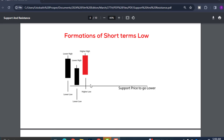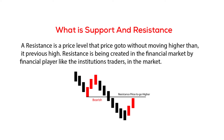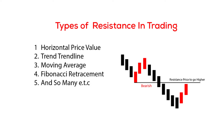Whenever price creates a short-term low, know that it's very difficult for price to go lower below that short-term low. Now let's look at what is a resistance. A resistance is a price level that price goes to without moving higher than its previous high. Resistance is being created in the financial market by financial players like institutional traders. Whenever price creates a lower high and a lower low, remember that that previous high will act as a resistance — a ceiling for price to go higher.